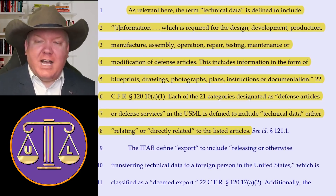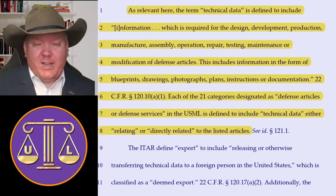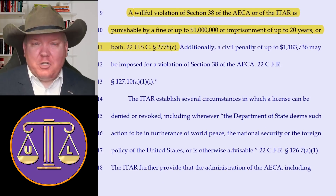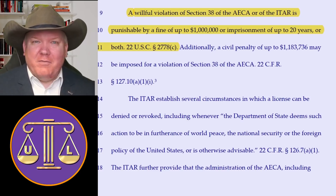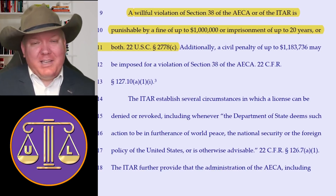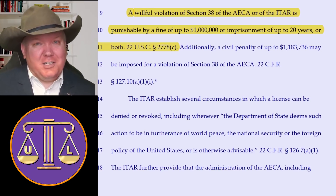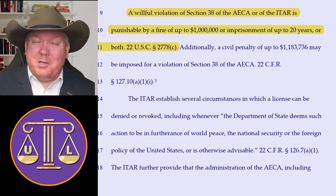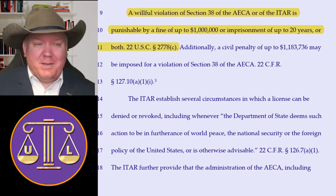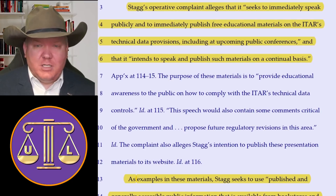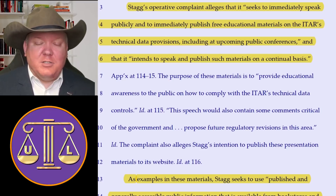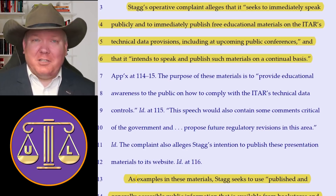Each of the 21 categories designated as defensive articles or defensive services in the relevant law is defined to include technical data either relating to or directly related to the listed articles. A willful violation of the relevant law is punishable by a fine of up to a million dollars or imprisonment of 20 years or both. The relevant violations here are pretty expansive — a million-dollar fine and imprisonment of 20 years for an ITAR violation. The U.S. government's not kidding; they're very, very serious. You can see exactly why the plaintiff is a little bit nervous about potentially violating the law. The plaintiff's operative complaint alleges that it seeks to immediately speak publicly and to immediately publish free educational materials on ITAR's technical data provisions, including at upcoming public conferences, and intends to speak and publish such materials on a continuous basis.